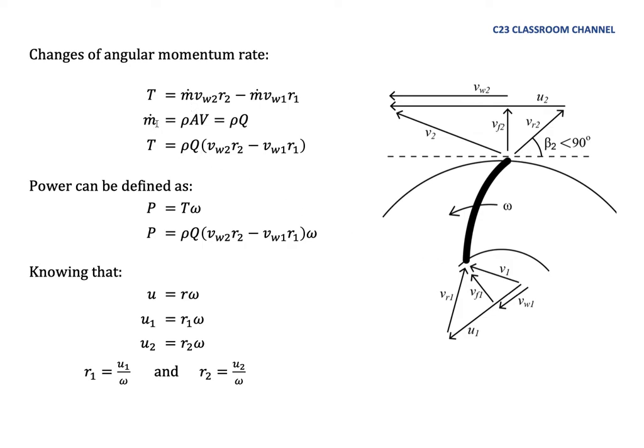So we substitute the value of M dot with rho A V or with rho Q. So we could write this equation as T equals rho Q, V world 2, R2 minus V world 1, R1. And then we also could define that power is torque times rotational speed, T and omega. And from these terms we could get that T is equal to rho Q, V world 2, R2 minus V world 1, R1, omega.